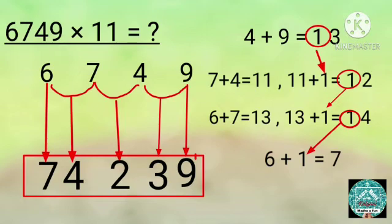Then add 6 and 7. 6 plus 7 equals 13. 13 plus 1, that is carried, equals 14. Write 4 here and carry forward 1.